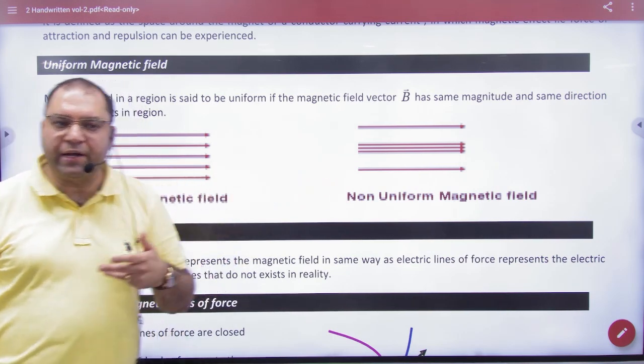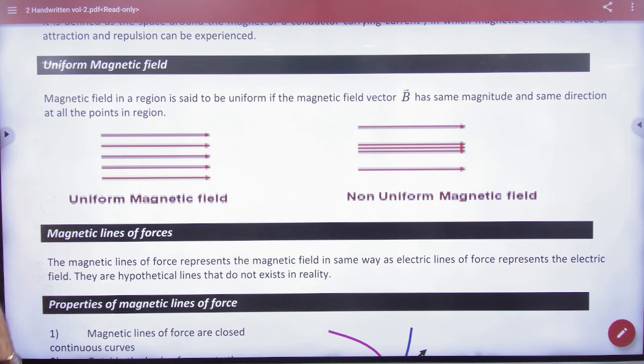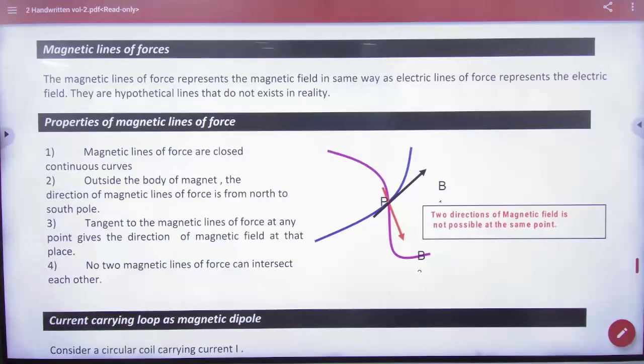The lines which you pass, magnetic field is strong. The same as the electric field. Okay?